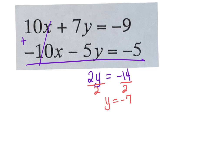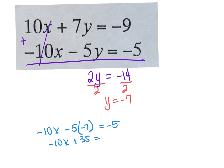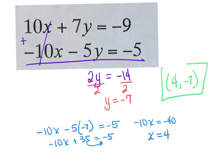We are going to add straight down here. Negative 10 and positive 10 are going to cancel. 7y and negative 5y — that's going to give me 2y. And negative 9 and negative 5 give me negative 14. So then y equals negative 7. Once I know y, I can plug it back into either of the other equations. Negative 10x minus 5 times negative 7 equals negative 5. Negative 10x plus 35 equals negative 5. Subtract that 35 over. Negative 10x equals negative 40. Divide by negative 10: x equals 4. So my answer here is (4, negative 7).